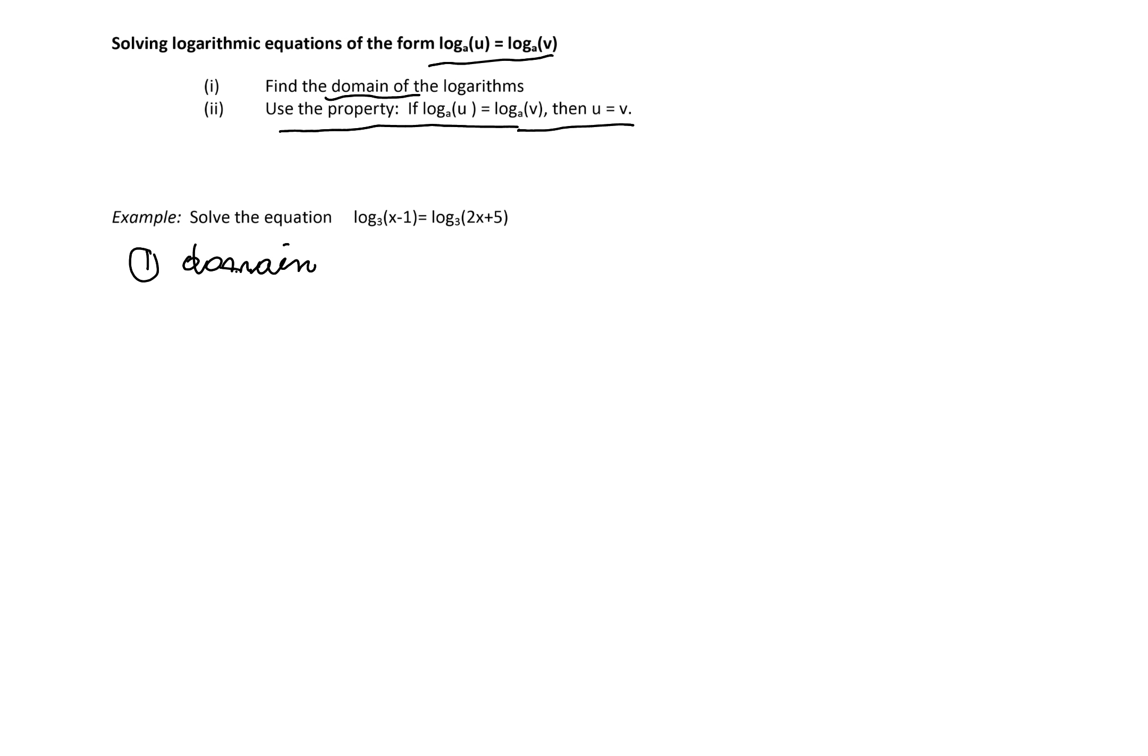First, logarithm to the base 3 of x minus 1 will be defined when x minus 1 is greater than 0. The second logarithm will be defined when 2x plus 5 is greater than 0. Those two conditions have to happen simultaneously because we want both logarithms to be well defined. The first inequality leads to x greater than 1, and the second will lead to x greater than negative 5 over 2.